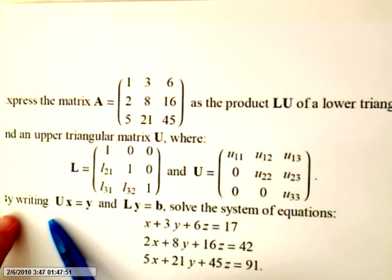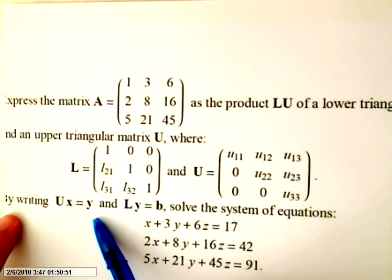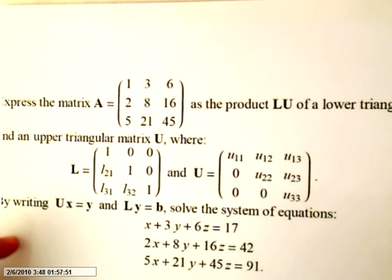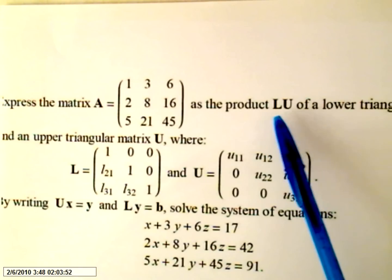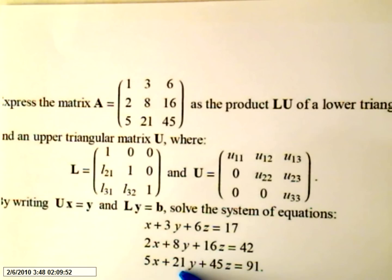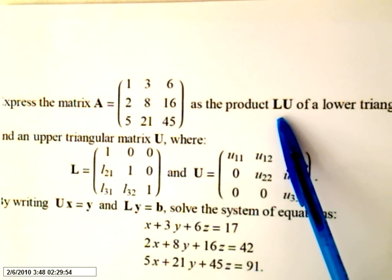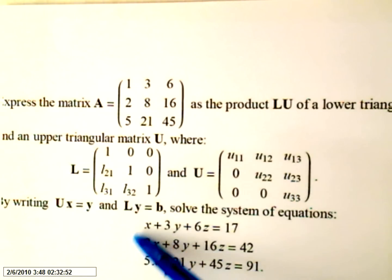And then it says, by writing UX equals Y and LY equals B, solve the system of equations. So this is what we usually call using LU decomposition to solve a linear system. For instance, another huge application for the LU decomposition is to find the inverse of the matrix. But here we are using LU decomposition to solve a linear system.